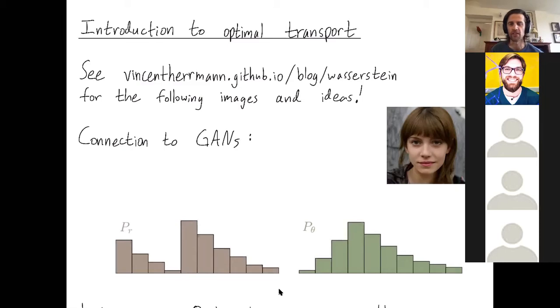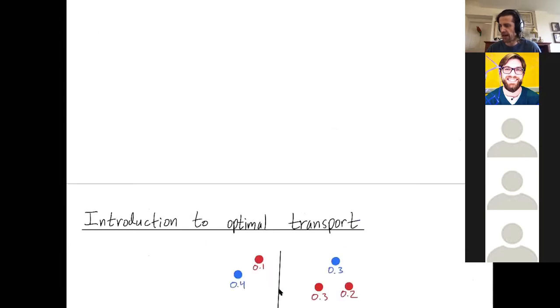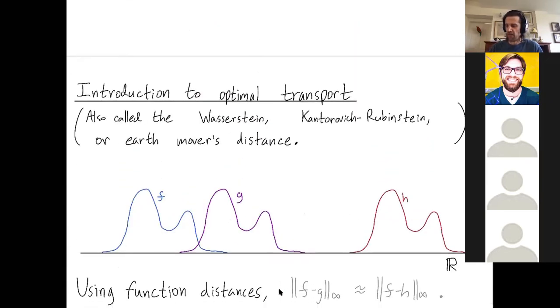It relates a little bit to the geodesics that we talked about a couple of videos ago. When you want to transform f into h, most people would say that the intermediate function is somewhere here, as opposed to like the sum of those two.